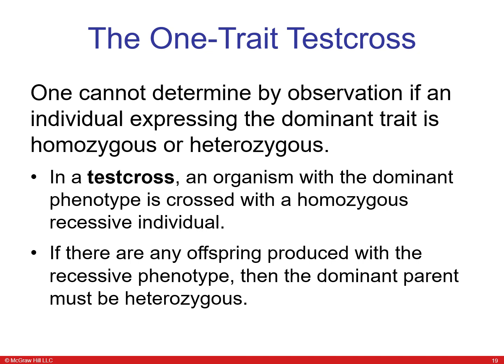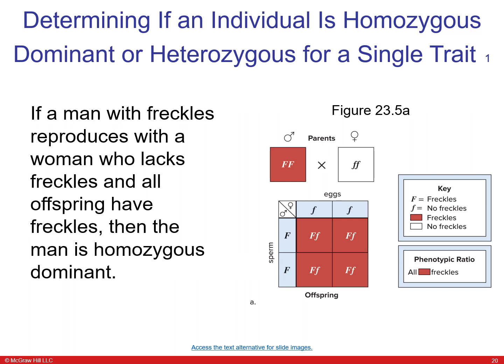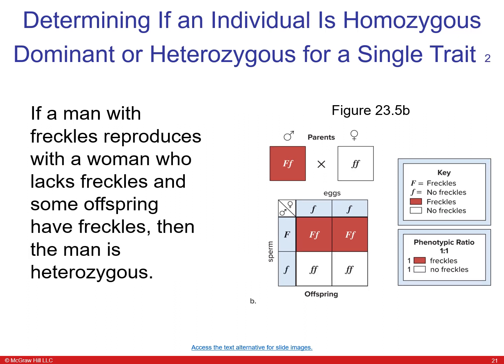One cannot determine by observation whether an individual expressing a dominant trait is homozygous or heterozygous, so a test cross must be performed. If any offspring show the recessive phenotype, the dominant parent must be heterozygous. For example, a man with freckles mating with a woman who lacks freckles — if no offspring lack freckles, the man is homozygous dominant. If heterozygous, offspring show a 50-50 chance of freckles or no freckles.